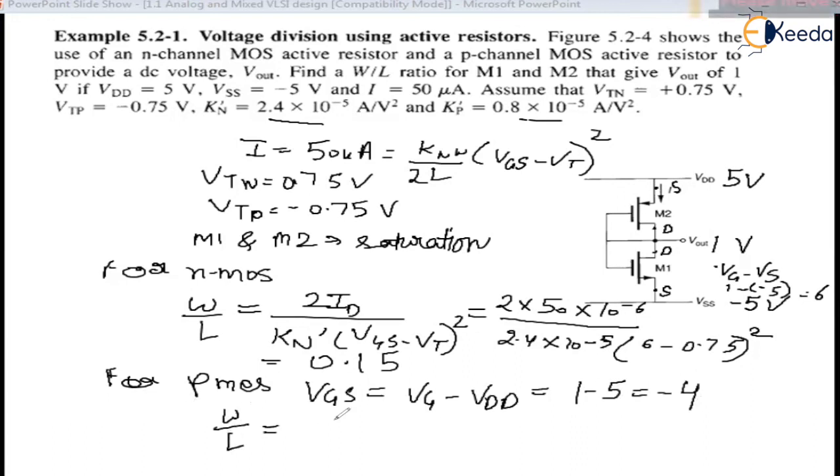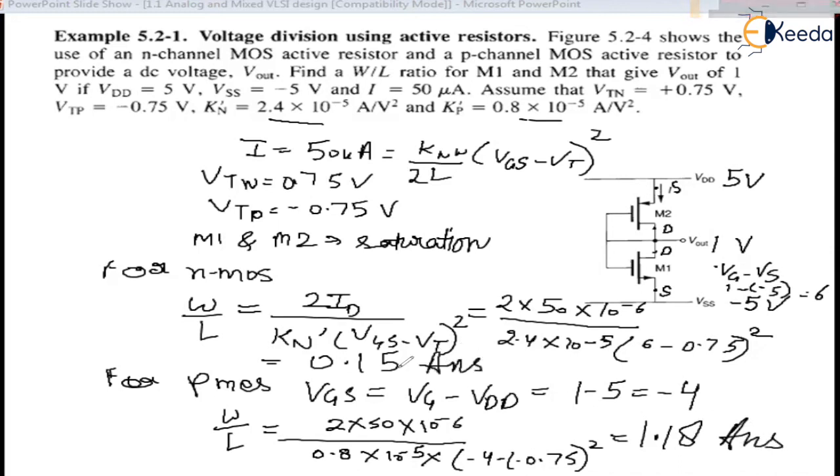W/L ratio substituting all the values similar to the NMOS, 50 microamperes, K_p' is 0.8 times 10 to the power minus 5 into (-4 - (-0.75)) whole square. This came out to be 1.18. So this is the answer for PMOS, W/L is 1.18 and for NMOS it is 0.15.